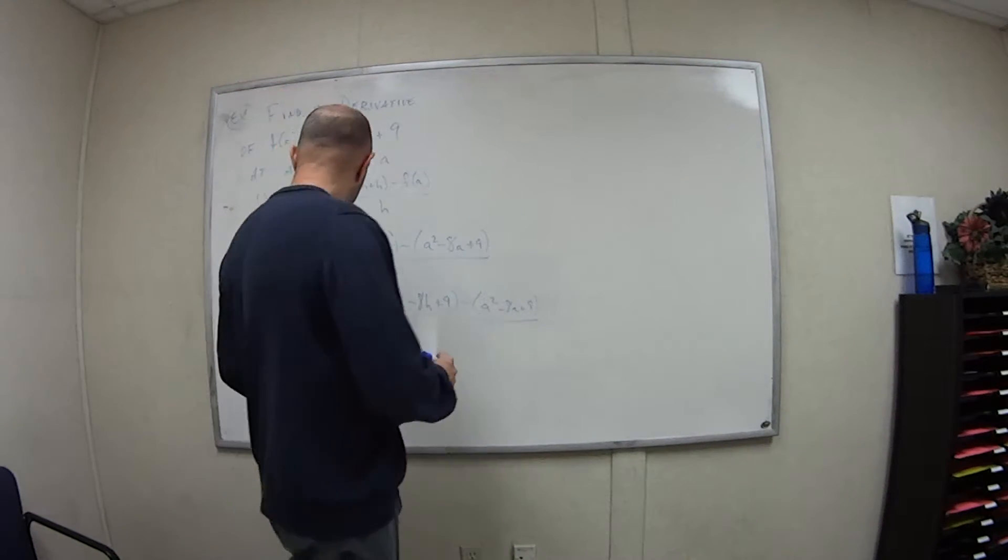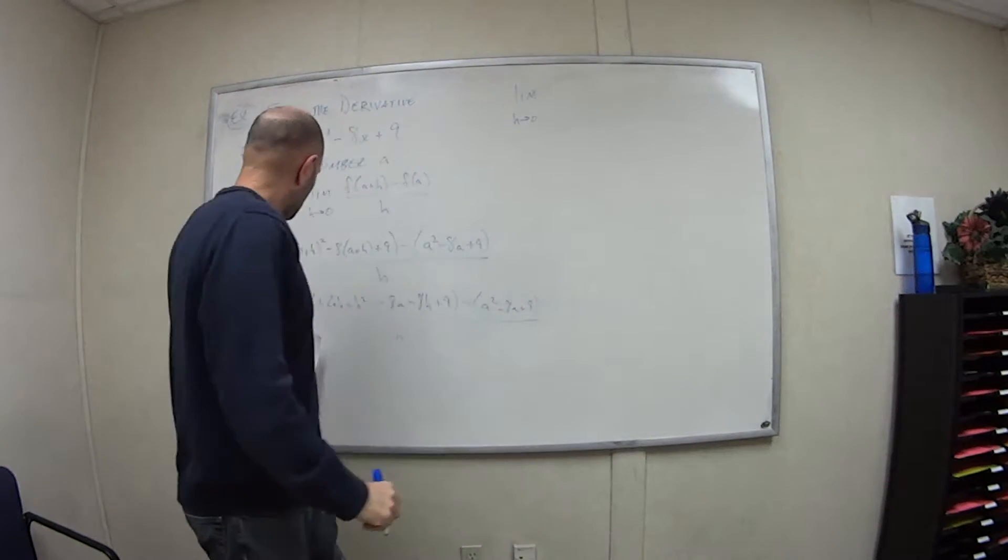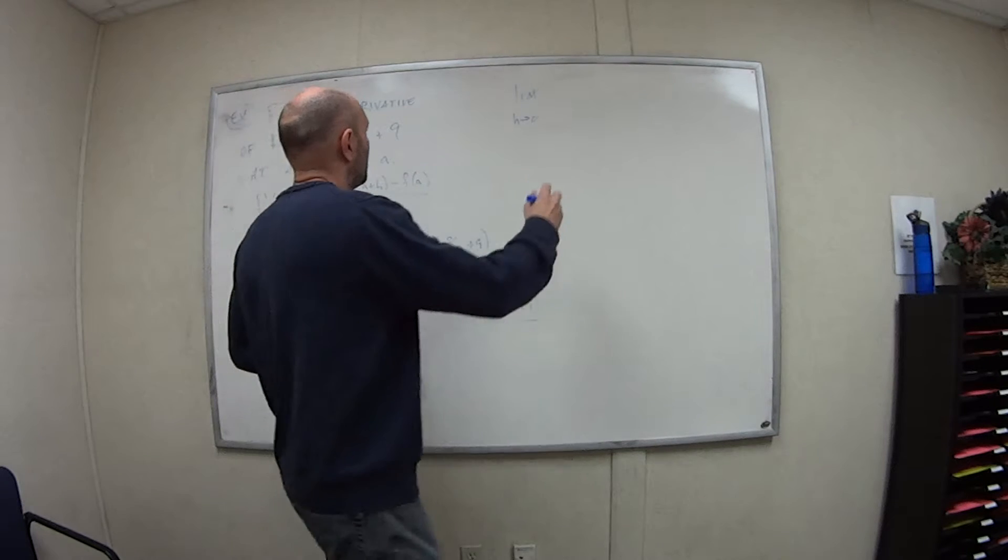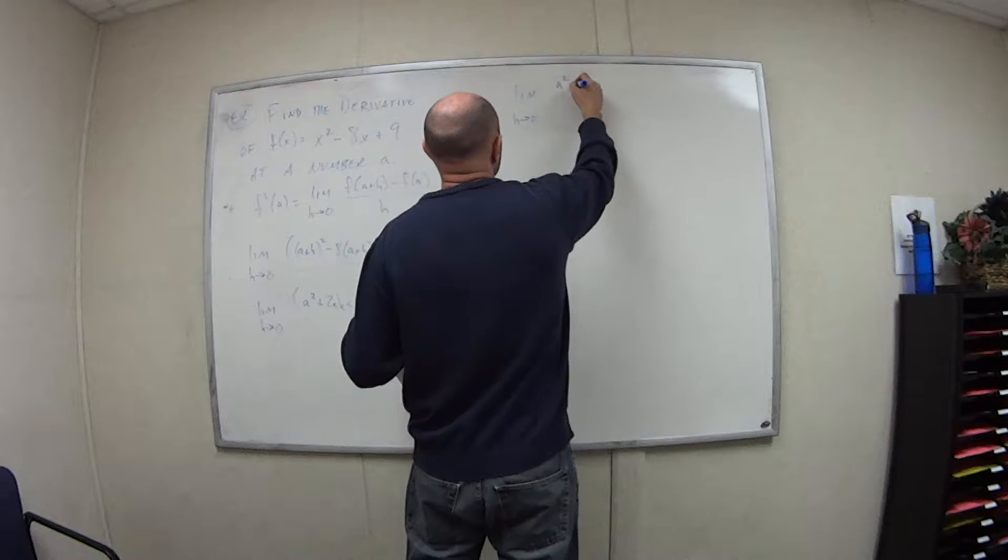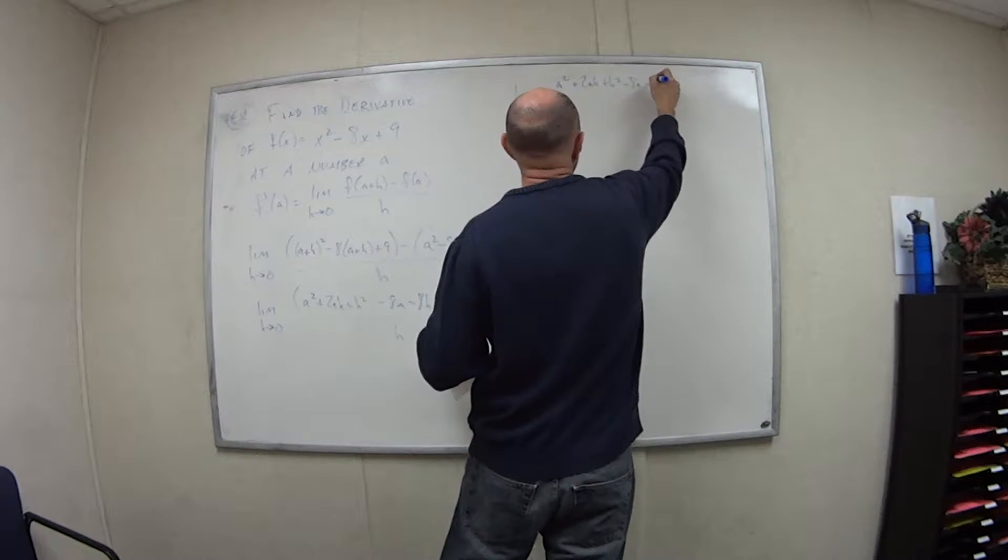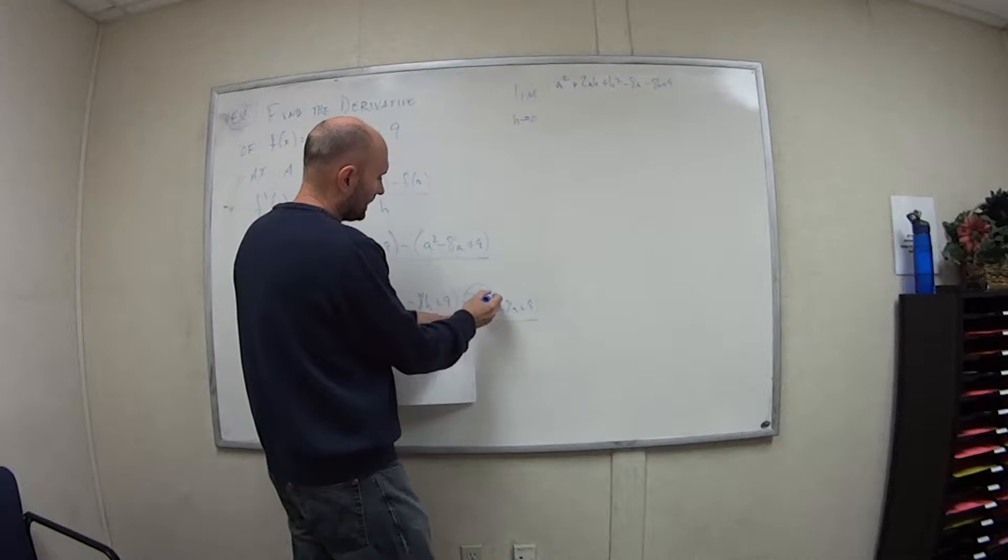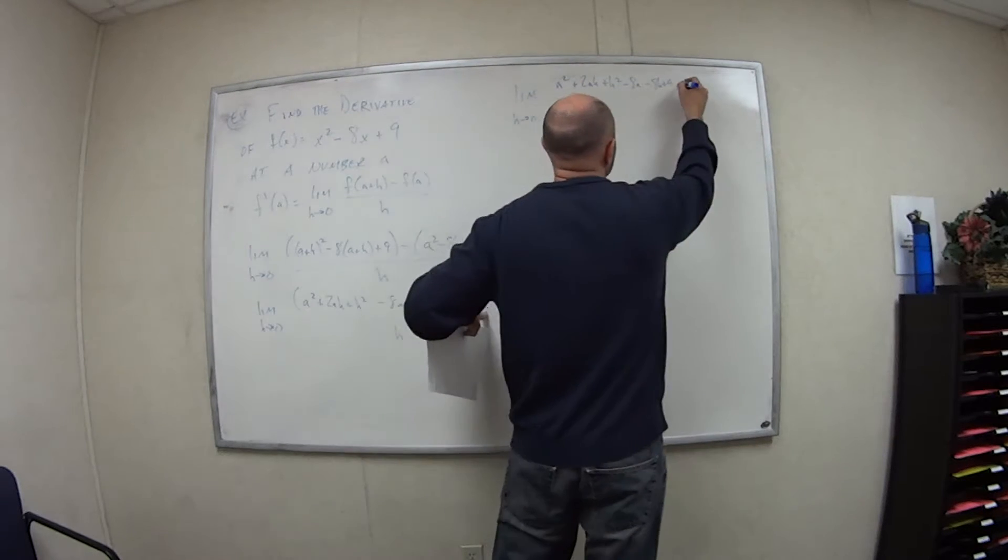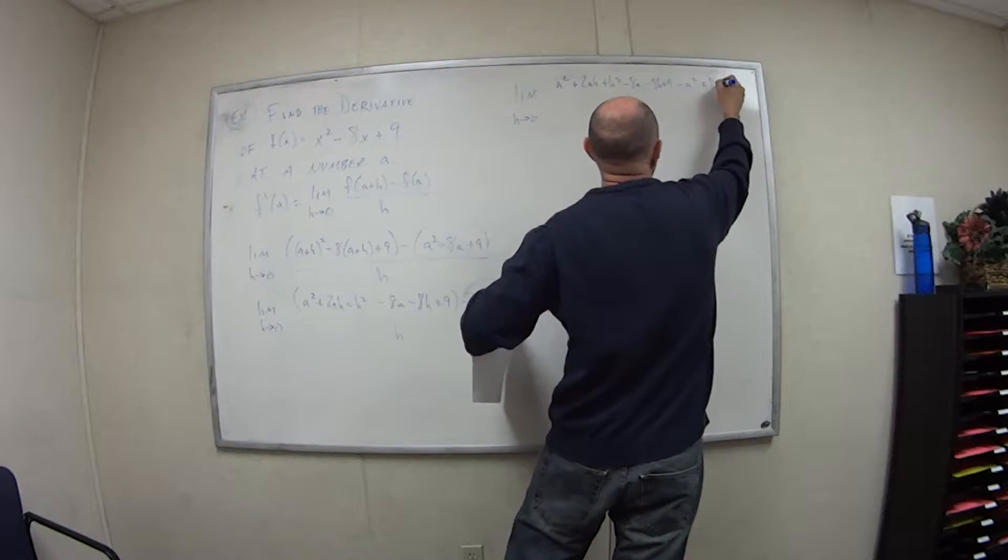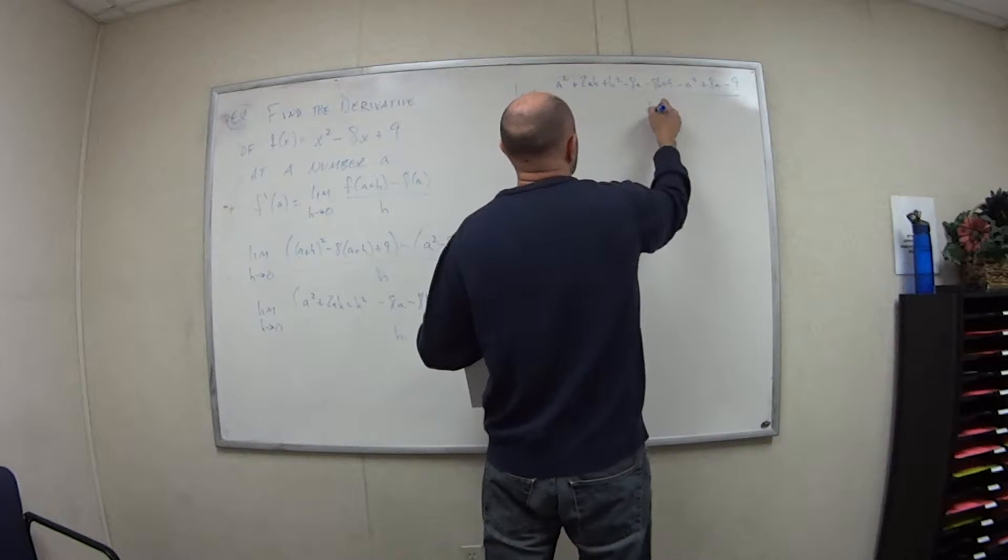And then minus this: a squared minus 8a plus 9, all over h. So now let's get rid of parentheses. The top here we can pretty much just get rid of parentheses. So we have a squared plus 2ah plus h squared minus 8a minus 8h plus 9. And now be careful here because you have to distribute this negative to all three pieces. So minus a squared plus 8a and minus 9, all over h.